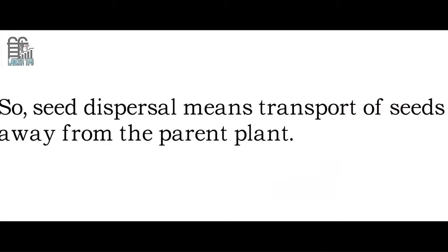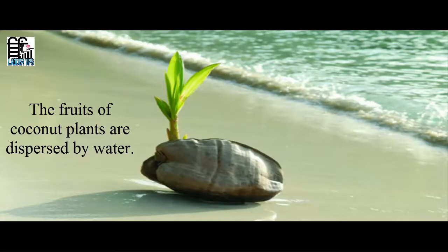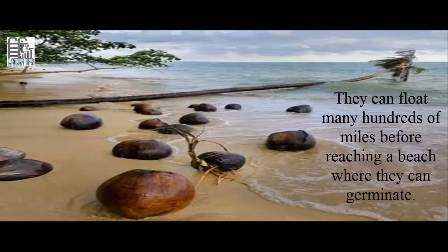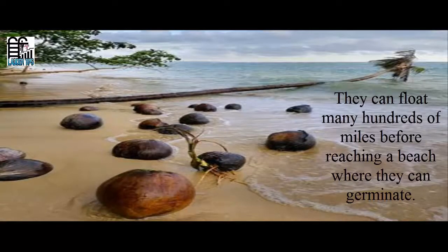The fruits of coconut palms are dispersed by water. They can float many hundreds of miles before reaching a beach where they can germinate.